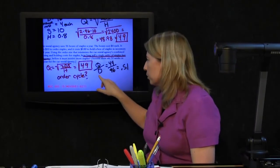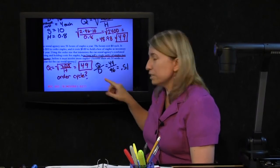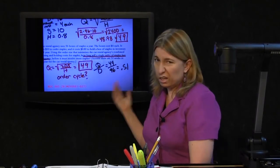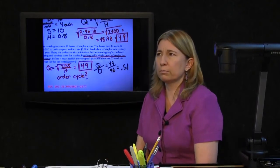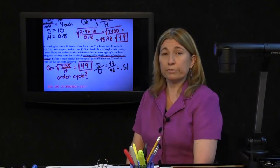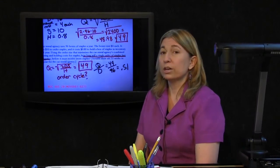This simple formula, one thing we have to remember is that because the D refers to a year, the answer refers to a year. So if you're asking this question, how long is 49 boxes going to last them? 0.51 - 0.51 what? Years.